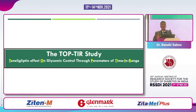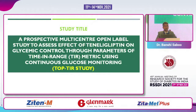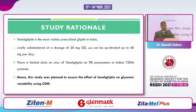Now I will discuss my study done with teneligliptin — the TOP-TIR study: Teneligliptin Effect on Glycemic Control Through Parameters of Time in Range. The study title: a prospective, multi-center, open-label study to assess the effect of teneligliptin on glycemic control through parameters like time in range metric using continuous glucose monitoring. We used ambulatory glucose profile Libre Pro for this study.